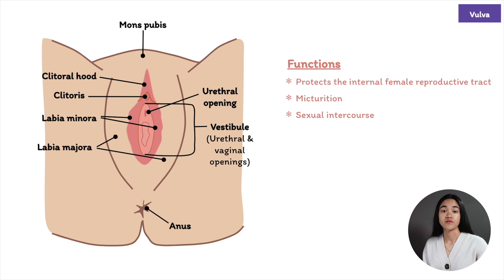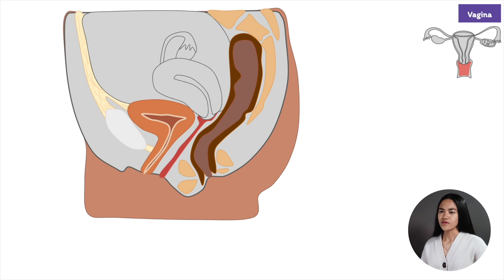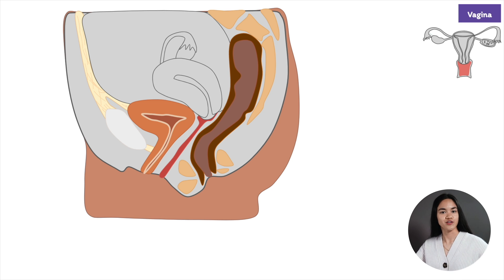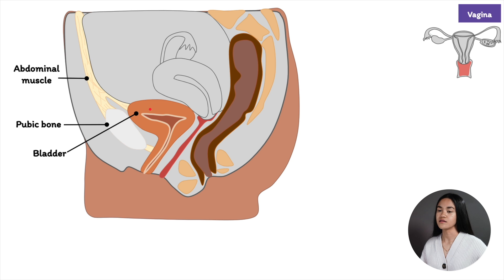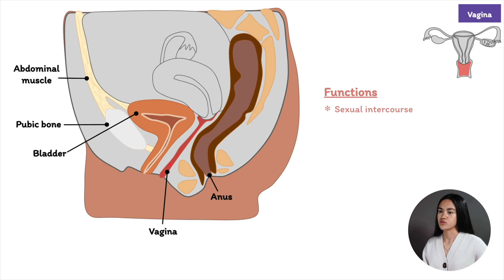Now let's move on to the internal female genitalia, starting with the vagina. The other parts have been grayed out so we can focus on the structure being discussed, similar to the male reproductive system lecture. Let's label the surrounding anatomy: the pubic bone, abdominal muscle, bladder, and anus. Here is the vagina.